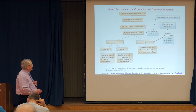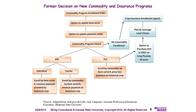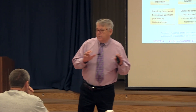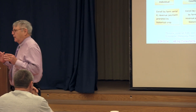Once you've done that, you have to choose between ARC and PLC. If you choose ARC, you then have two options: individual coverage or county coverage. You might think on the surface you'd rather have individual coverage, but in most cases, probably not. It is signed up by farm serial numbers, so if you've got two farm serial numbers in the individual ARC program, they're going to take crops from both farm serial numbers and combine that revenue together to count against the guarantee.